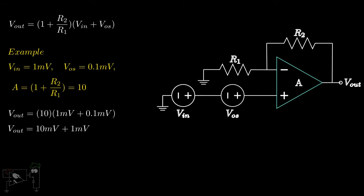As we do not know the exact polarity of VOS, we tend to write the output as 10, plus or minus 1. That is, the output can be 9 millivolts or 11 millivolts.